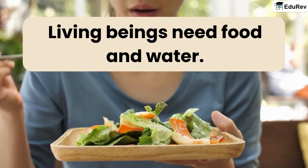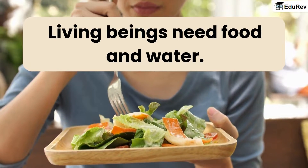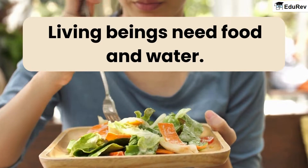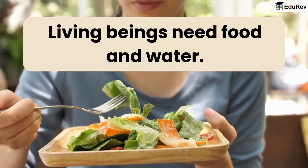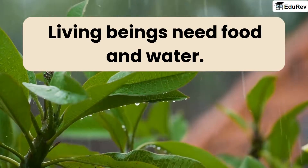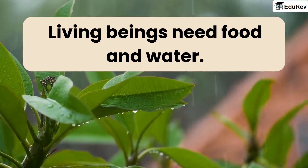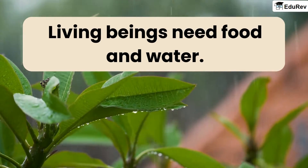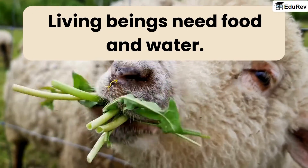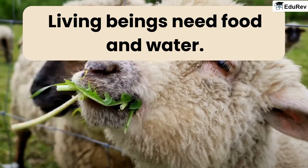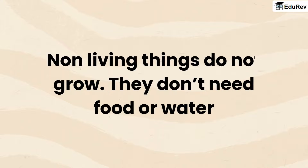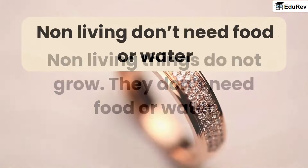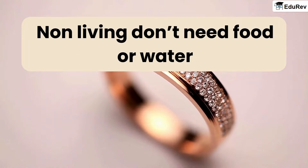Living beings need food and water. Human beings depend upon plants and animals for their food. Plants make their own food using water, air and sunlight. Animals depend upon plants or other animals for their food. Since non-living things do not grow, they don't need food or water. A ring doesn't need food or water.